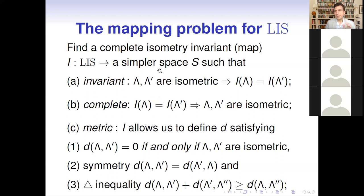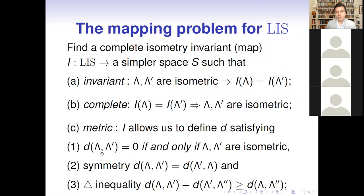That map should be an invariant, meaning that for isometric lattices our invariant takes the same value. The second condition, completeness, is much harder — it is the converse: if the invariant takes the same value, the lattices should be isometric. This is also called injectivity. The reason we map the isometric space to something simpler is that on a simpler space it is usually easier to define a metric satisfying the standard metric axioms, the most important being that distance is zero if and only if the lattices are isometric.